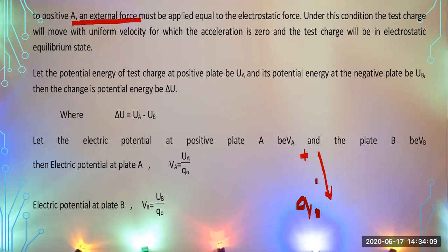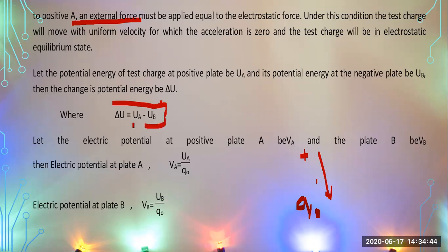When moving the charge against the electric field with uniform velocity, there is no acceleration. This condition is called electrostatic equilibrium. The test charge particle moves with uniform velocity so that the acceleration is zero, and the charge is in electrostatic equilibrium. Let the potential energy of the test charge at the positive plate be U_A and at the negative plate be U_B.